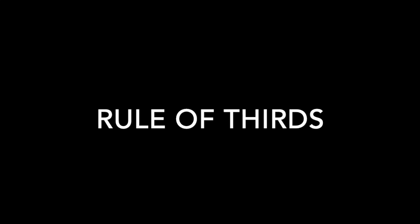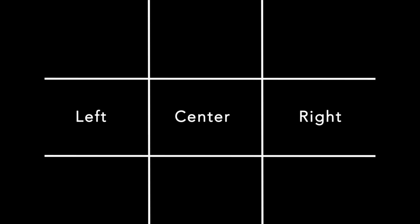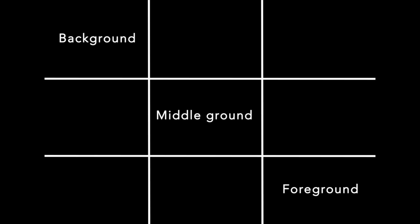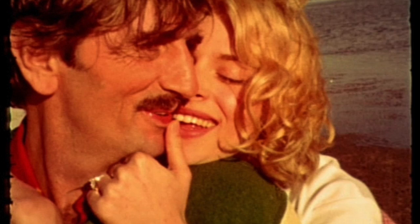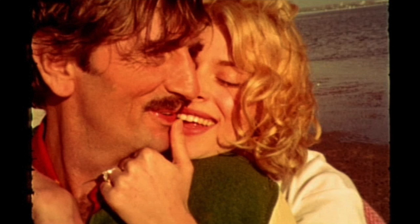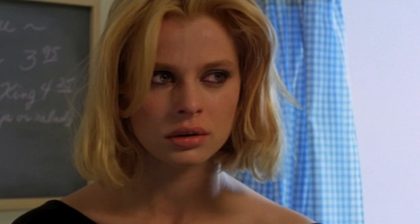Another component of mise-en-scene is the rule of thirds. In the composition of the shot, the frame is divided into three sections: left, center, right; top, middle, bottom; and background, middle ground, foreground. In this film, many times characters are shot either off to the side or directly in the center. Centered shots communicate stability and balance, while off-centered shots may convey that a character is out of place or conflicted.